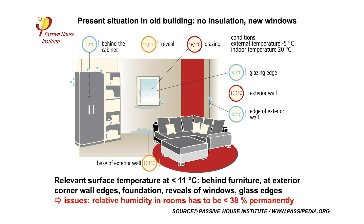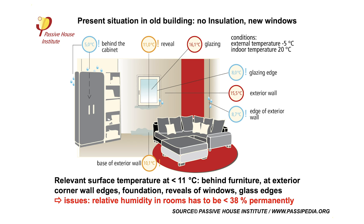Here you can see an old building that has no insulation but has new windows — PVC frames with double glazing, which are used a lot now. But it's still not comfortable enough. The problem is not solved because the walls are still cold and moisture appears.